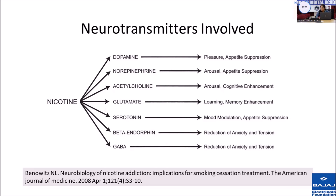Nicotine would increase activity in a lot of areas of the brain, such as the prefrontal cortex, thalamus, and the basal ganglia. Stimulation would also lead to a release of different neurotransmitters in the brain, including norepinephrine, acetylcholine, serotonin, and so on. One of the major effects is it causes the release of dopamine in the ventral tegmental area, which releases dopamine into the nucleus accumbens — a very critical part of the reward pathway, which I will be explaining further.